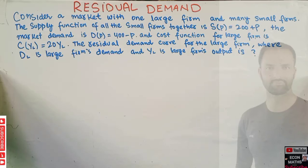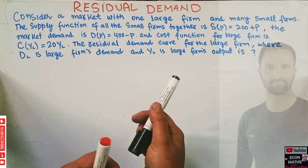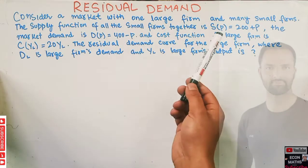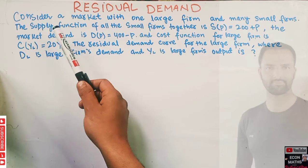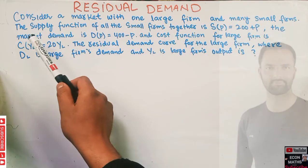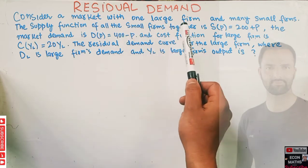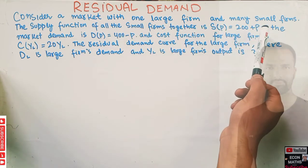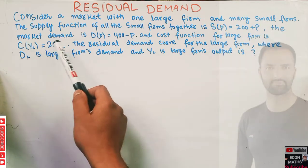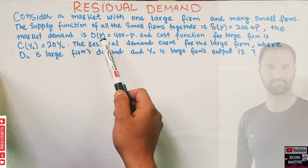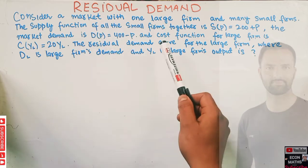In this video we will try to solve a problem asked by brother Imran Khalid on the Econ Methods Telegram channel regarding how to find the residual demand. Consider a market with one large firm and many small firms. The supply function of all the smaller firms together is S = 200 + P, where P is the price. The total market demand is D(P) = 400 minus P.